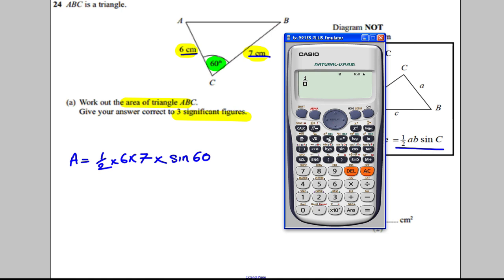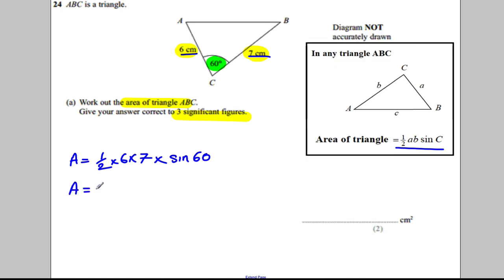We type one half multiplied by 6 multiplied by 7 multiplied by sine 60, close brackets, calculator in degrees mode. Press equals: 18.1865. Write that all down first before you round. To 3 significant figures: there's the first, second, and third. The line would go here, that 8 makes that a 2. So the area would be 18.2 centimeters squared. And we're done for this video.